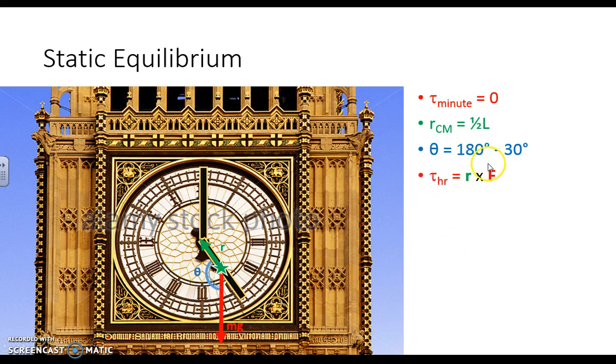Vector r cross product vector F. The magnitude of the torque on that hour hand is going to be Fr sin θ. We have F, mg. We have r, ½L. We have sin θ.